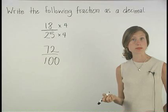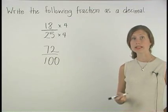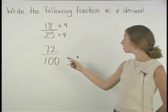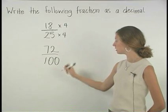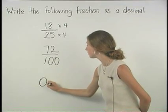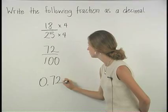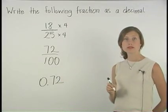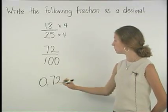Remember that the hundredths place is two places to the right of the decimal point. So we can write 72 hundredths as 0.72. So 18 25ths is equivalent to 0.72.